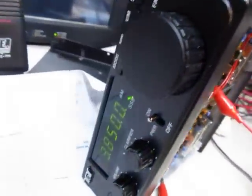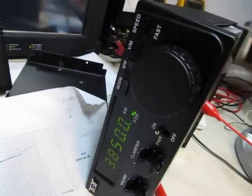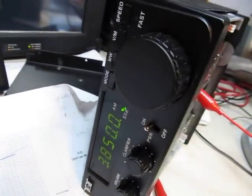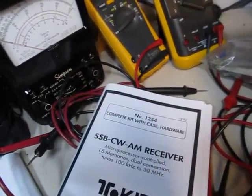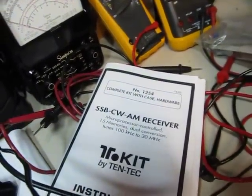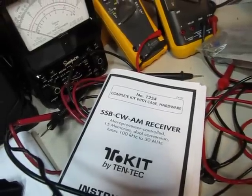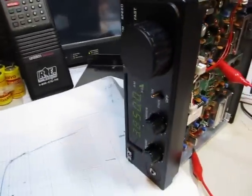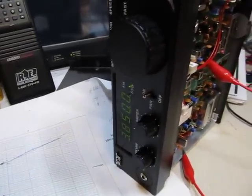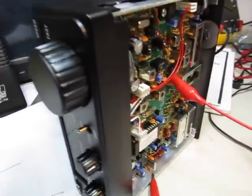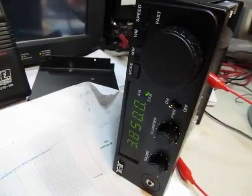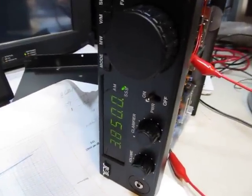involving my shortwave receiver kit here that I built last year. There's a Tentech model 1254 single sideband CW and AM shortwave receiver kit, really fun little receiver, works really nice. The only downside is it doesn't have an S meter, so let me put an S meter on here.